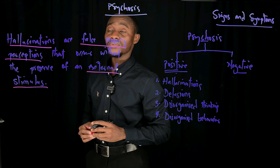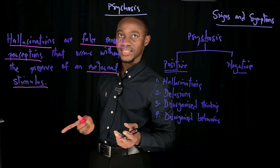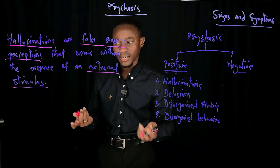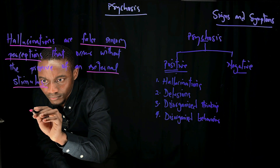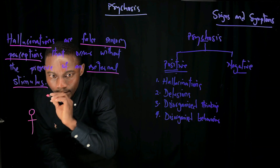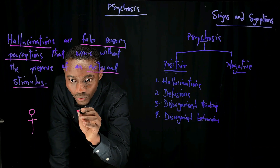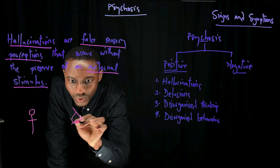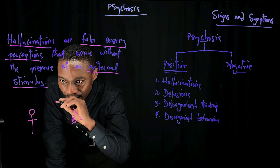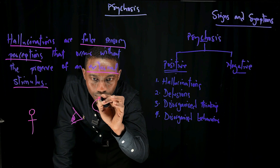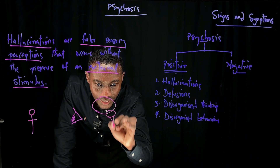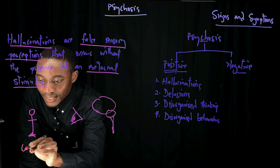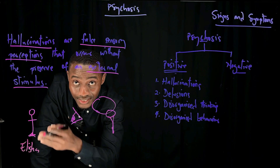I will start by explaining the concept of perceptions. Perception is when you become aware of something. Let's assume we have a human here and we have someone watching this human. This will be the person's eye and that is the person's brain. This human — that is Elisha — is the stimulus.